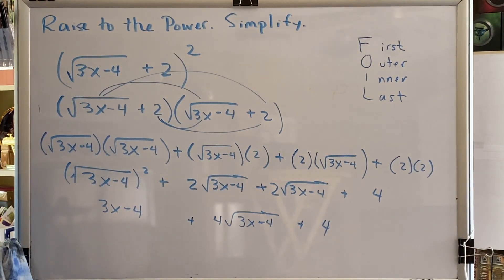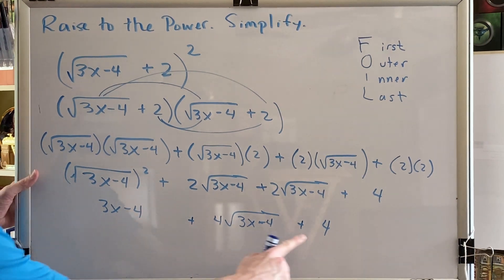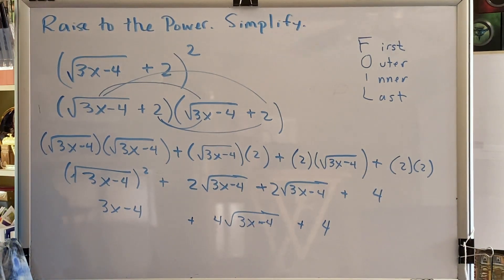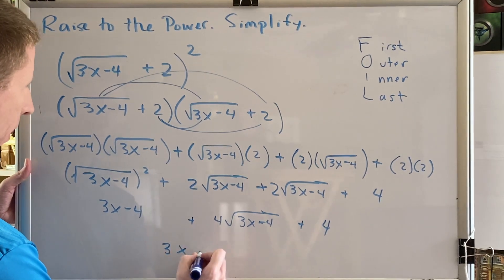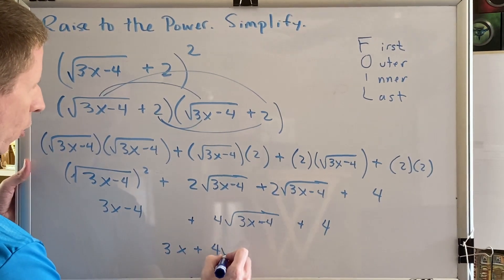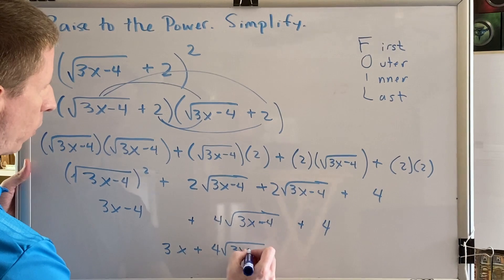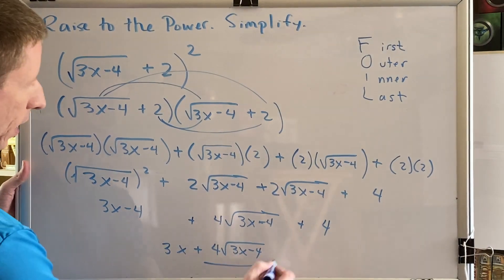And finally, put like terms together that can be combined. In this case, we have a subtract 4 and an add 4. Those cancel to the number 0. When you add opposites, it cancels to the number 0. So our final result will be 3x plus 4 times the square root of the difference 3x minus 4.